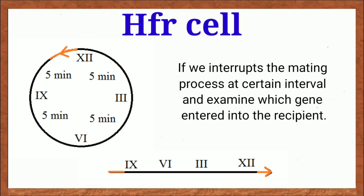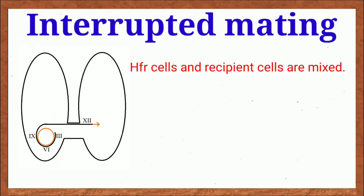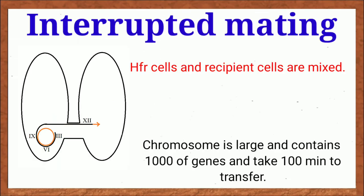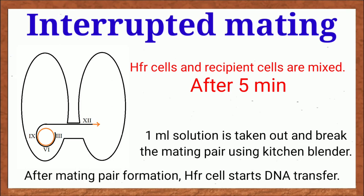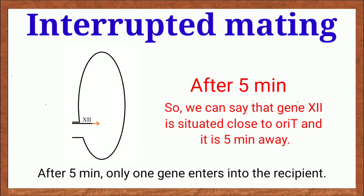And if we interrupt the mating process at certain interval using kitchen blender and scored which gene or genes enter into the recipient, then it is possible to determine the gene order depending on their time of entry. For example, if we interrupt mating process of these HFR cells and F minus cells at five minutes, then only gene 12 will enter.